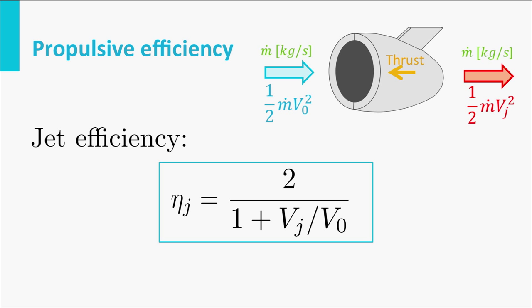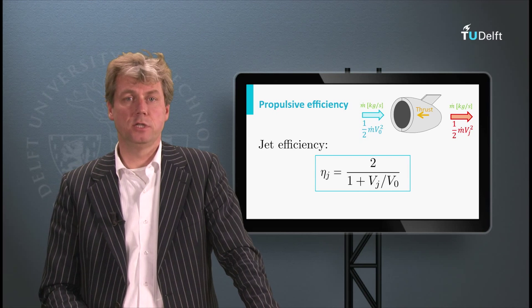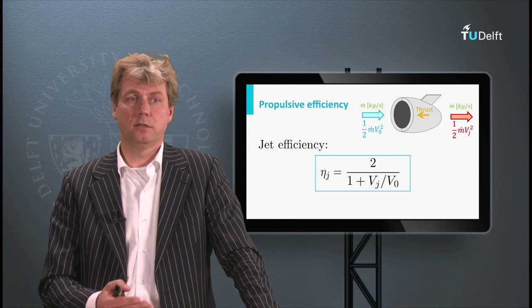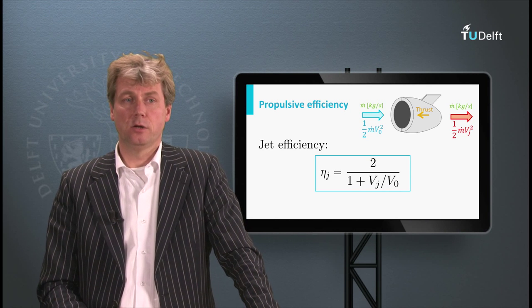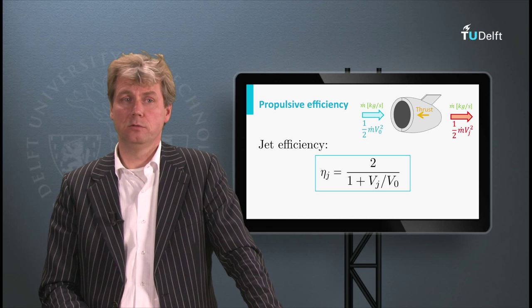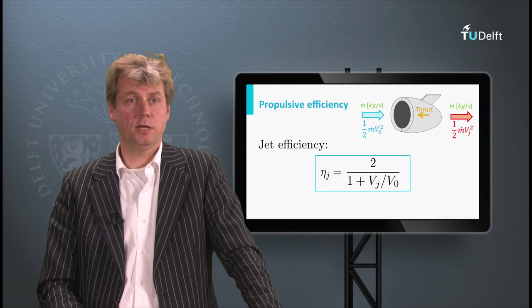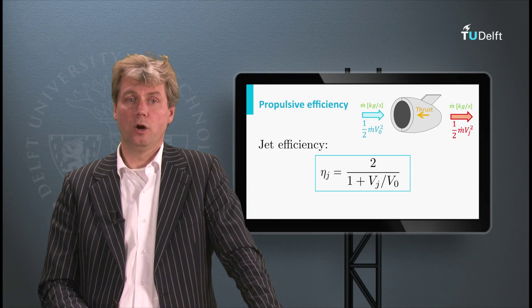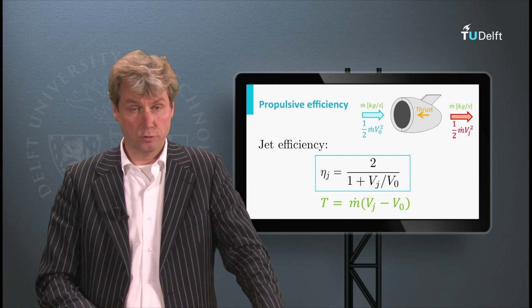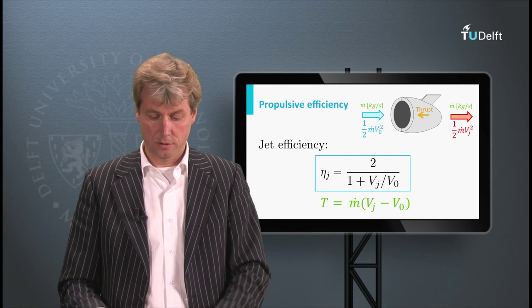From this equation we can calculate jet efficiency knowing only the jet speed and the intake speed. We always strive for 100% efficiency, meaning eta must equal one — so the denominator must equal two, which means 1 plus V_j over V zero equals two, so V_j must equal V zero. If exhaust speed equals intake speed, we have 100% efficiency. The problem, of course, is that our thrust then becomes zero. So we can generate zero thrust with 100% efficiency — not very useful, but an important insight.